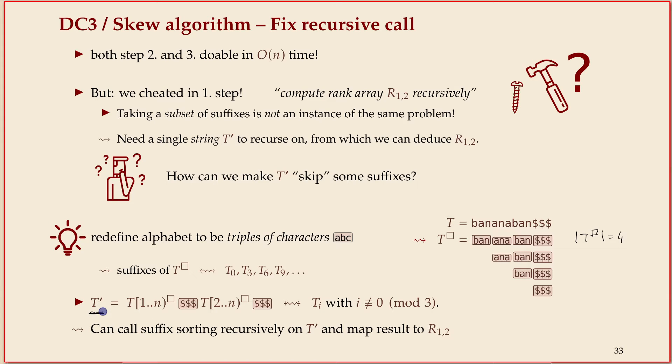Our actual T prime is not T box, but it's leaving off the first character of T and making the boxing construction on that. Make some dollar boxes in between to make sure we separate things. Then you take the first two characters away from T and apply the boxing construction, and you append all that.